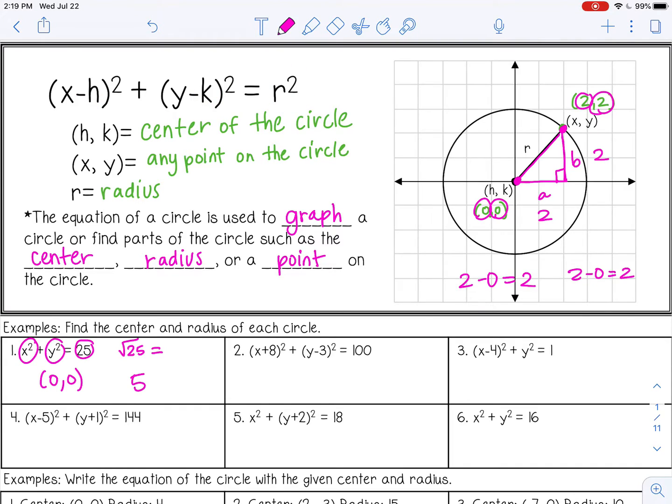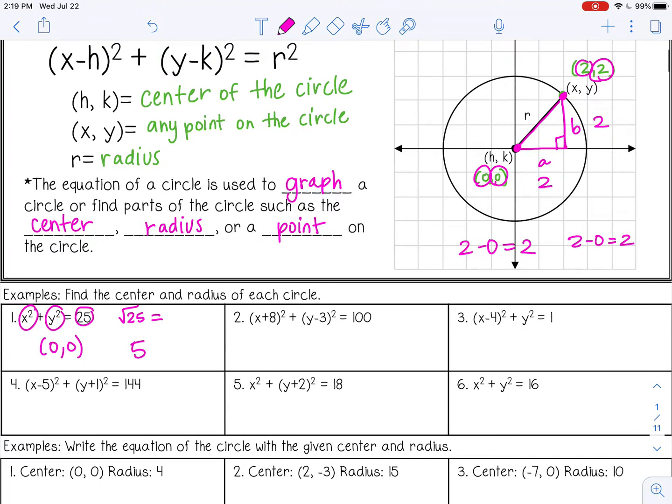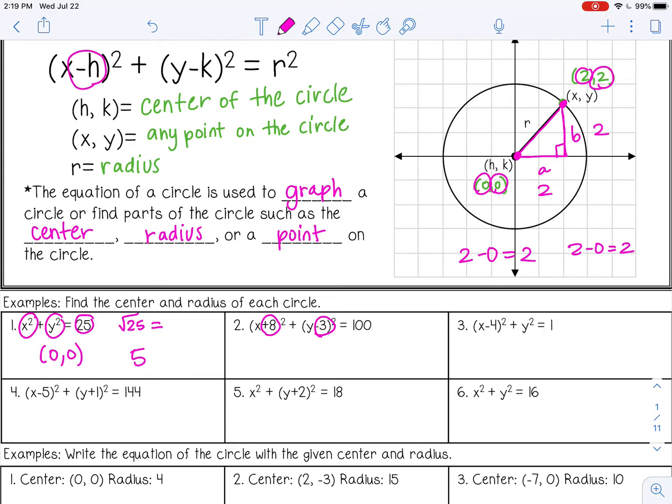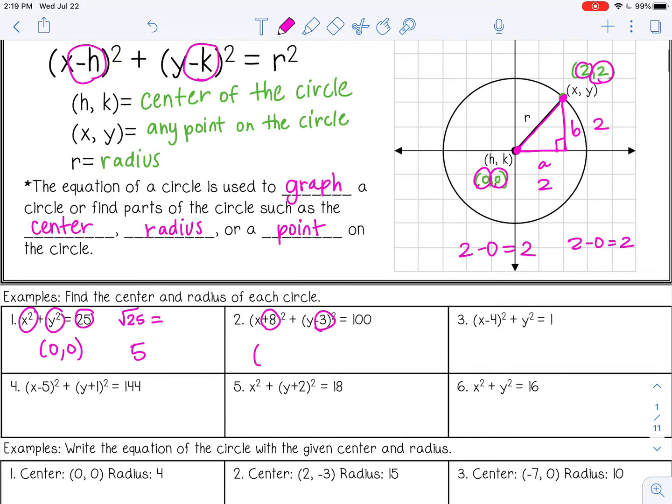All right, in the next example, we do have an h and a k. But if you notice in the formula, it says negative h and negative k. So it's actually changing the signs of both the x and y-coordinate of my center. So when I take it out of the equation, it's actually negative 8 and positive 3 for my center. And then again, we're going to take the square root of 100 to give us the radius, which is 10.